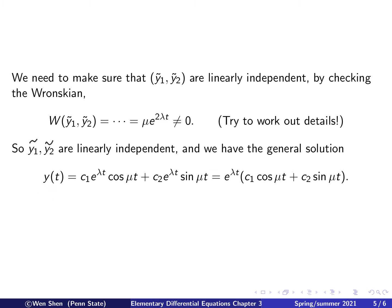The general solution is y equals c1 times y1 tilde plus c2 times y2 tilde. Factoring out the common exponential of the real part, we get y equals e to the lambda t times the quantity c1 cosine mu t plus c2 sine mu t. The exponential factor comes from the real part lambda, and the cosine and sine come from the imaginary part mu.